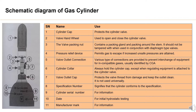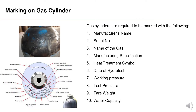8. Specification Number — signifies that the cylinder conforms to the specification. 9. Cylinder Serial Number — for information. 10. Date — for initial hydrostatic testing. 11. Manufacturer Mark — for information. Gas cylinders are required to be marked with the following: Manufacturer's Name, Serial Number, Name of the Gas, Manufacturing Specification, Heat Treatment Symbol, Date of Hydro Test, Working Pressure, Test Pressure, Tare Weight, and Water Capacity.